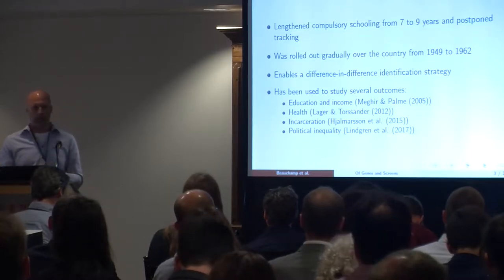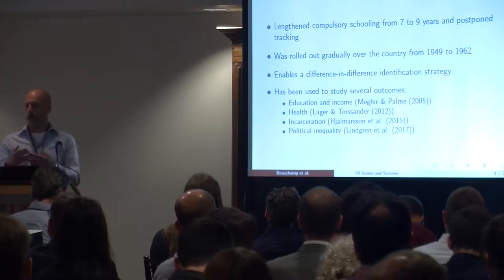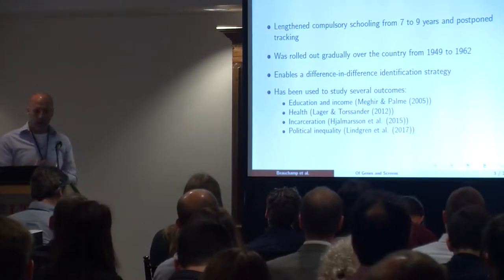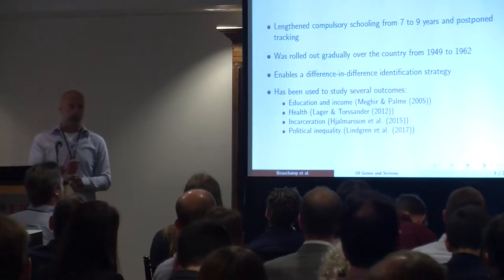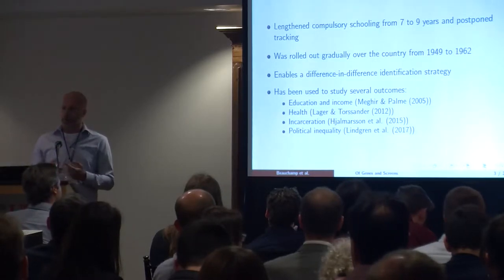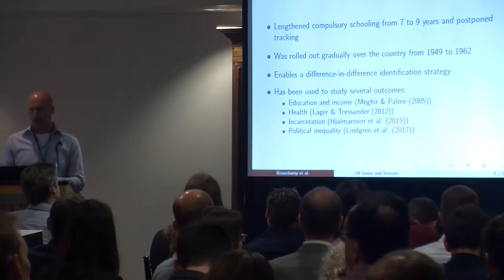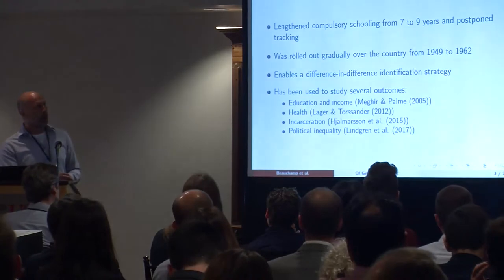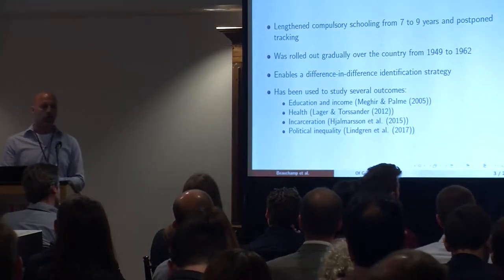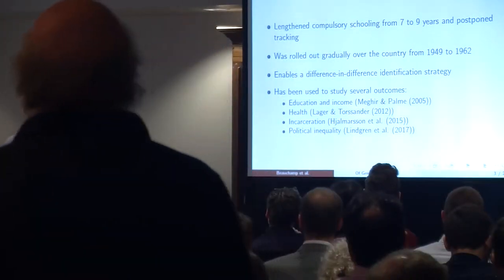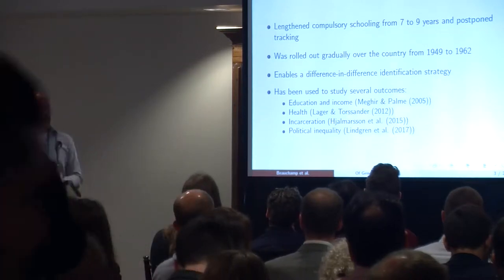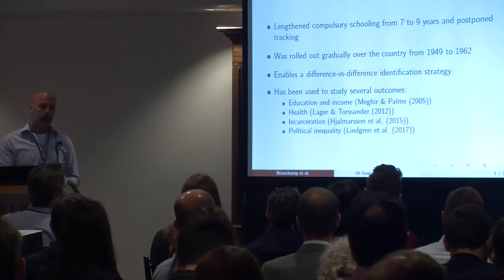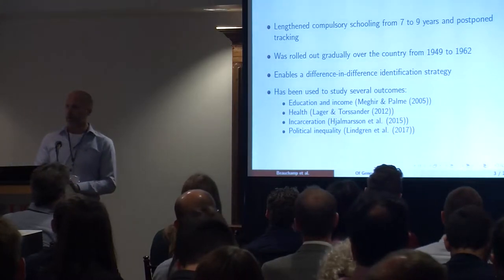This means that for a prolonged period, we had a situation where students born in the same year but living in different municipalities were assigned to different school systems. At the same time, students living in the same municipality but close in age were also assigned to different school systems. These features enable us to use a difference-in-differences strategy to provide more plausible causal estimates of the reform on different outcomes. The seminal study exploiting these features is a paper by Costas Meghir and Morten Palme, published in the American Economic Review in 2005.